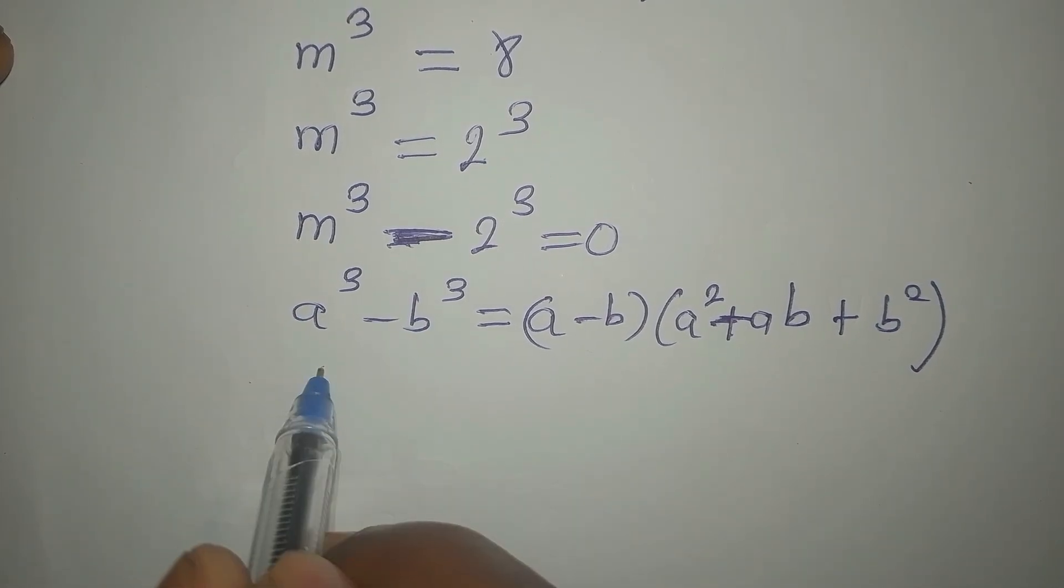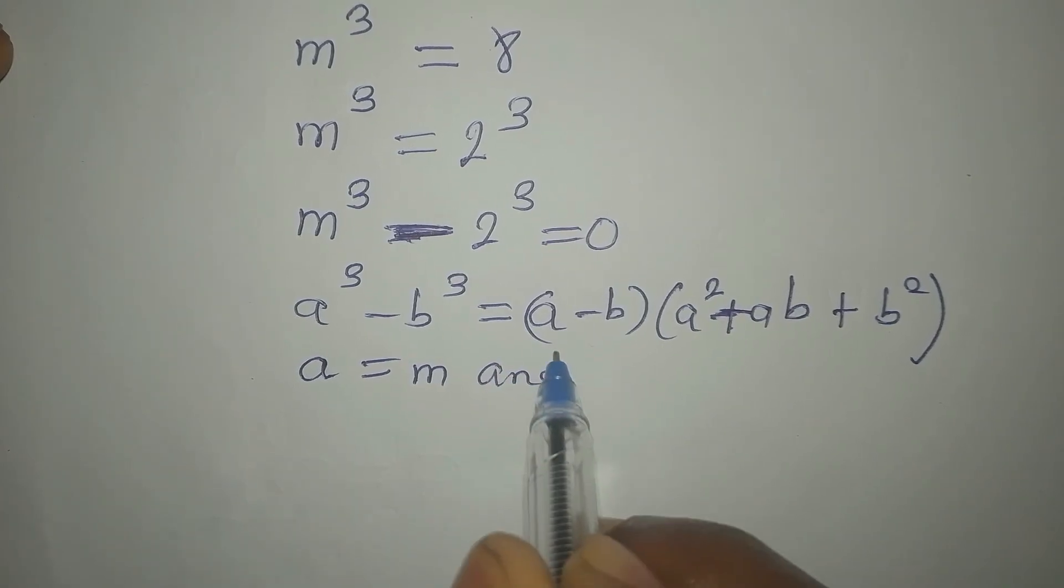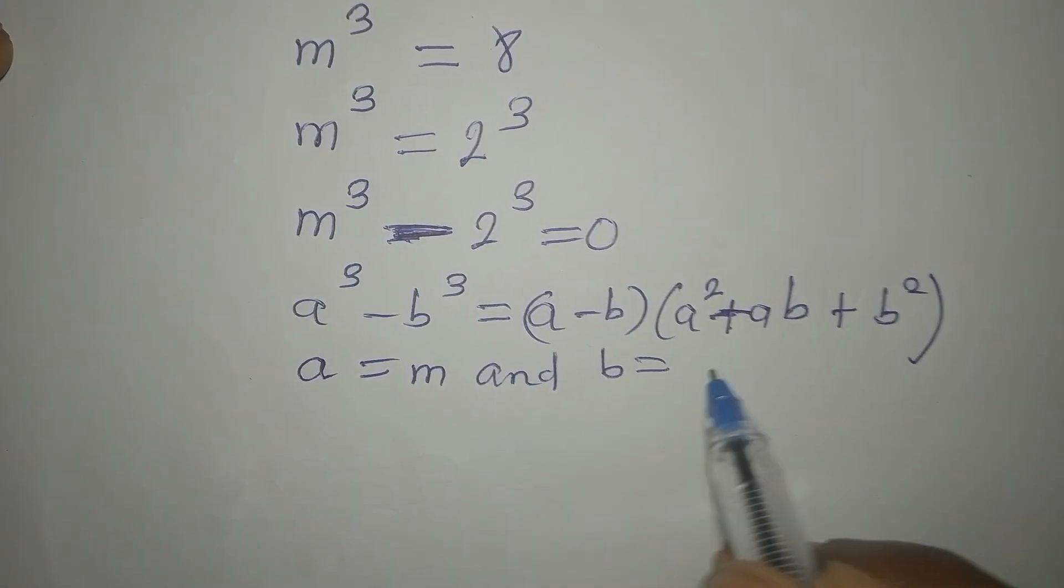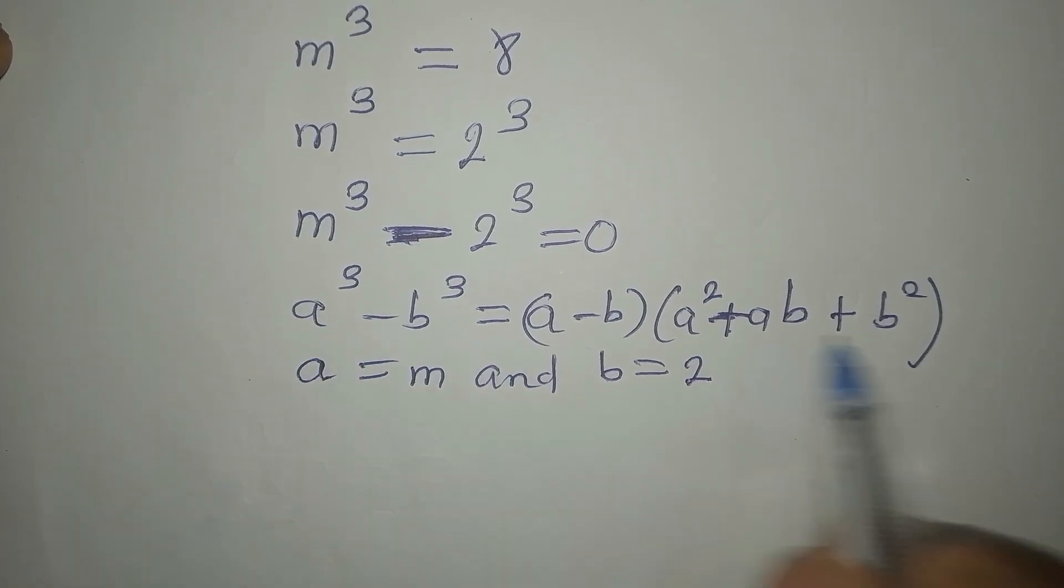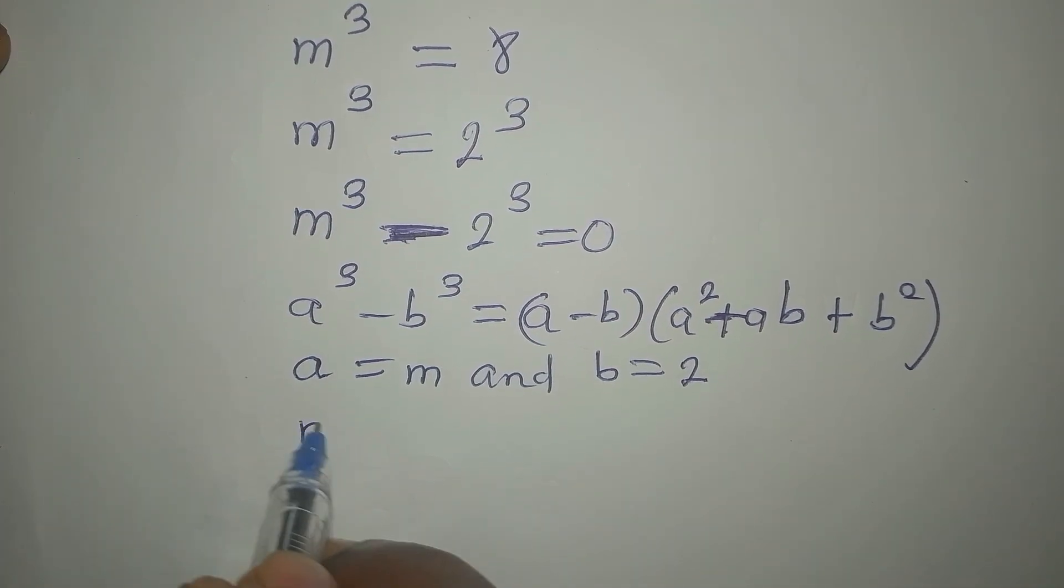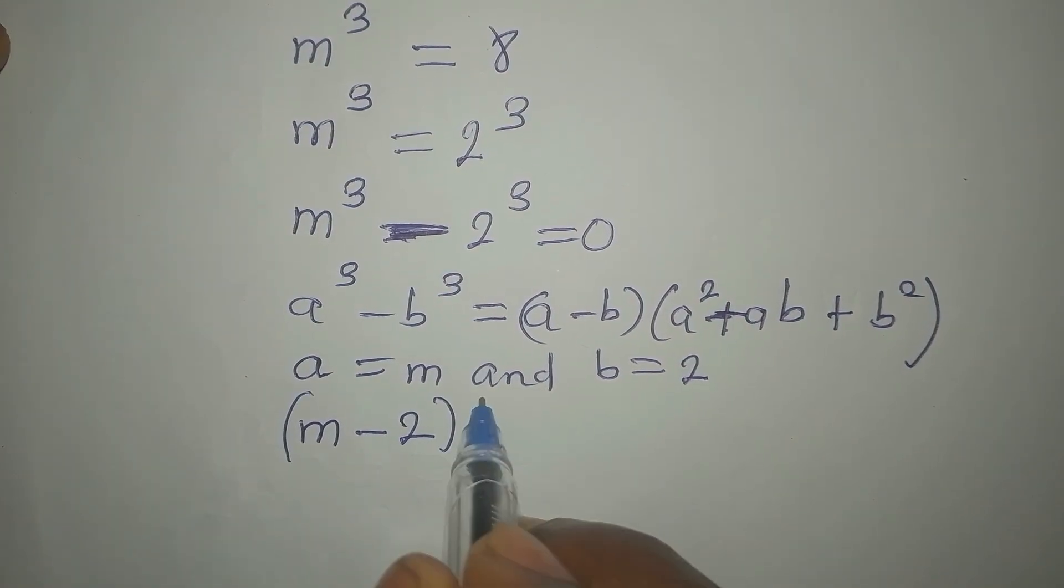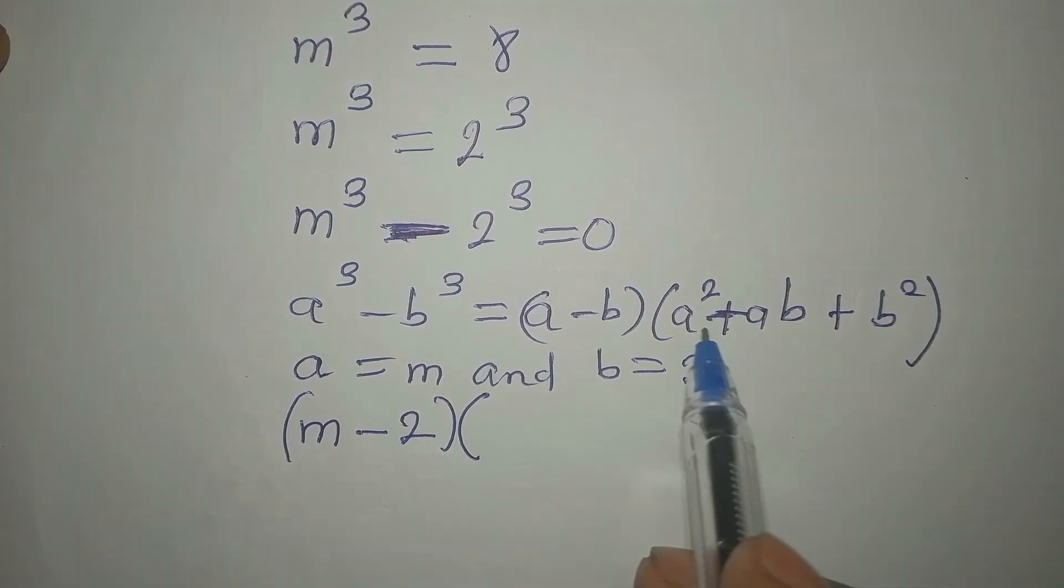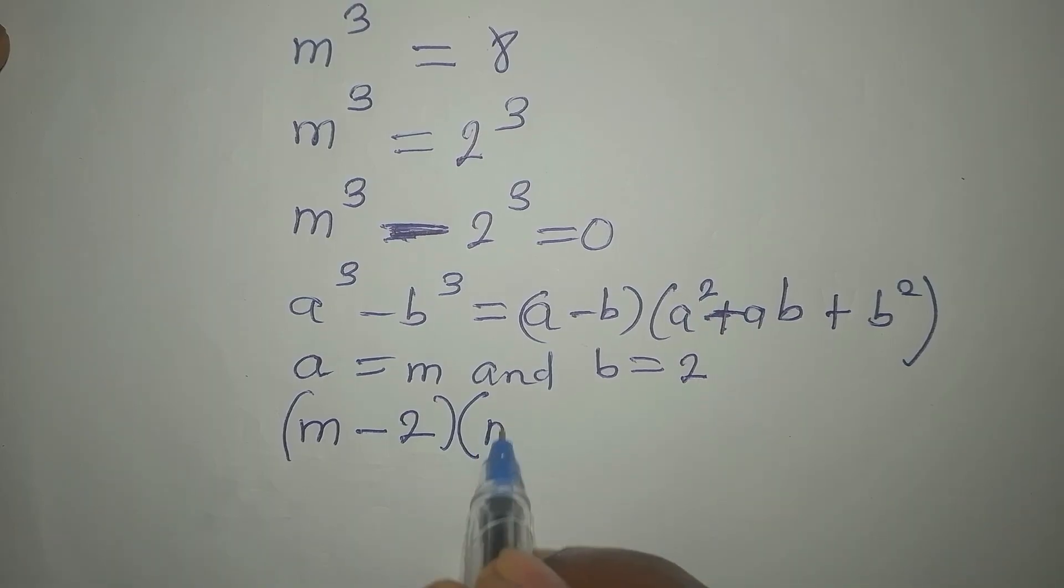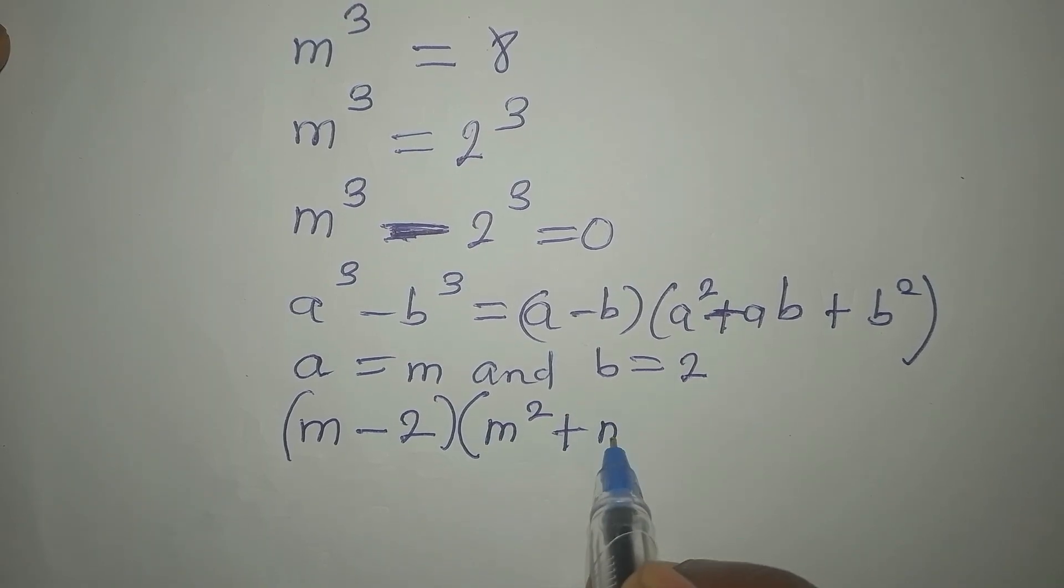Now our a is now m and our b is 2. So let's substitute into this. So this right here will now be a minus b, which will be m minus 2. Then in the second, a squared will now be m squared.